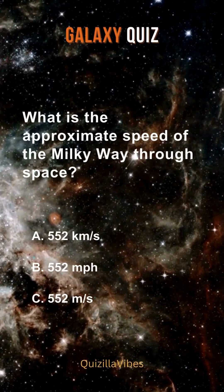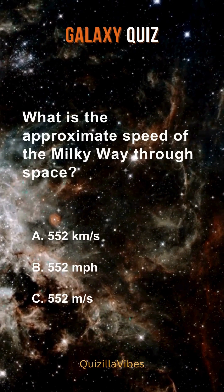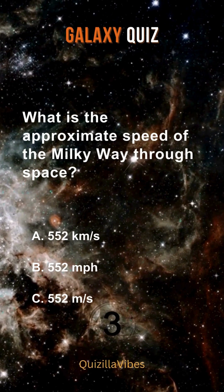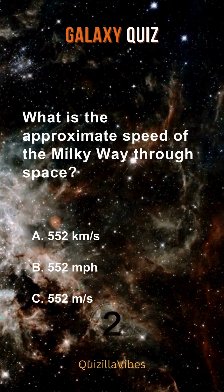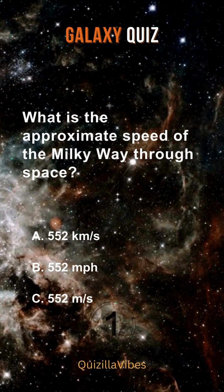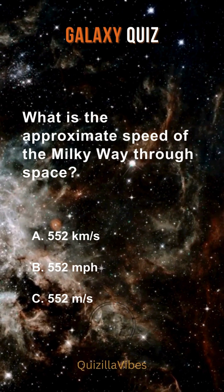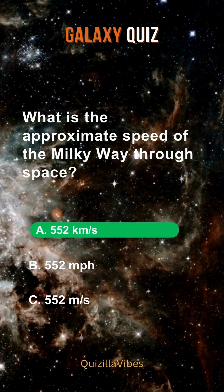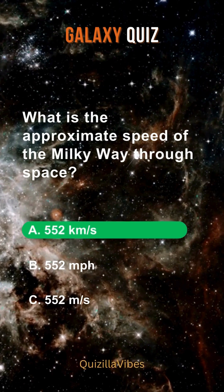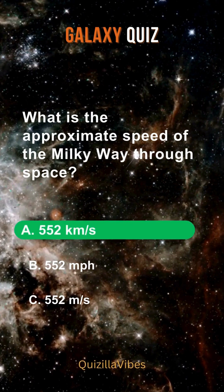What is the approximate speed of the Milky Way through space? 550 kilometers per second.